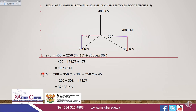For the horizontal components: we have two forces towards east — 200 kN plus 350 × cos 30° — and we subtract the opposing force of 250 × cos 45°. Calculating this gives the sum of horizontal components equal to 326.33 kilonewton, and the direction will be towards west.